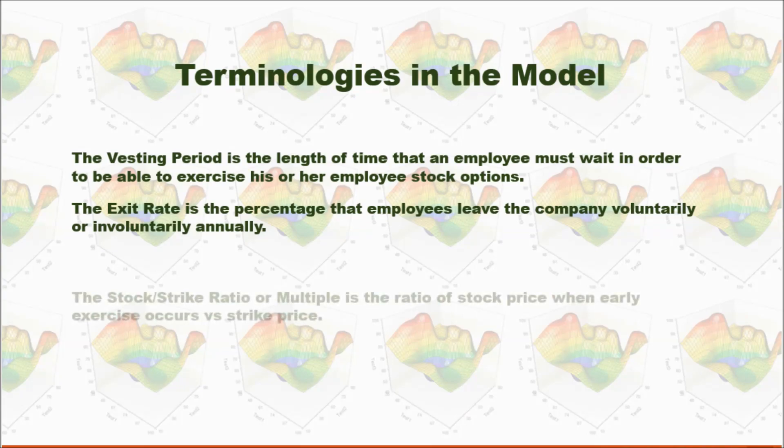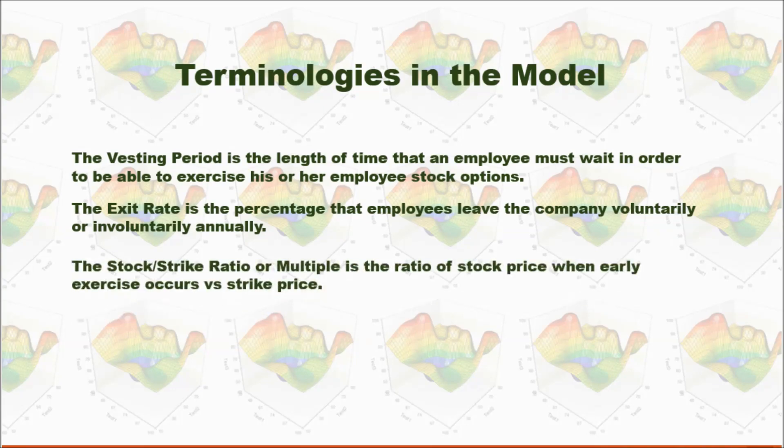The stock strike ratio or multiple is the ratio of stock price when early exercise occurs versus strike price. This means only when the stock price rises above the multiple, the employee will exercise the option. Otherwise, it doesn't work to exercise earlier.